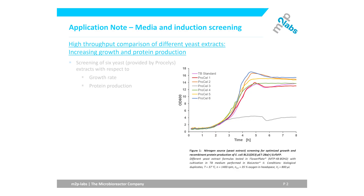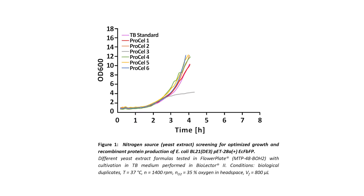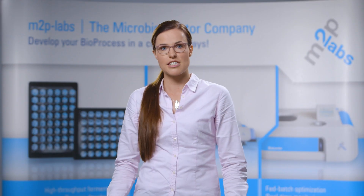In this application note, different TB media were prepared with six different yeast extracts provided by the company Preselis, to evaluate the impact of these different nitrogen sources on the growth and protein production of the organism. In the first experiment, E. coli growth was observed by the online calibrated OD measurement, which you can see here in Figure 1. The different nitrogen sources lead to different optical densities.